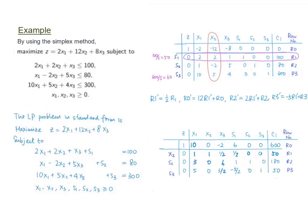Now we decide whether the solution given by this system is optimal by checking whether there are still negative coefficients among the variables in the objective function. In our case, the solution is not yet optimal because the coefficient of x3 in the 0th row is still negative — and it is the only negative value among all variables in the objective function. So the column representing x3 is now the key column, meaning x3 will replace one of the variables to become a basic variable.